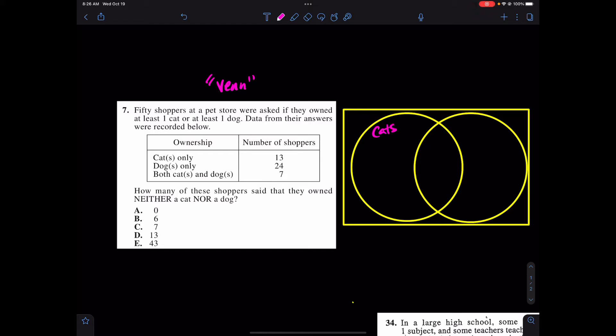Let's take a look at how to do something like this. Let's say that this is cats and this is dogs. From there, it does say that both cats and dogs, so I'll put the seven in the middle. It says that 13 are cats only, and 24 are dogs only. Interesting.